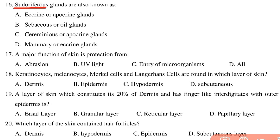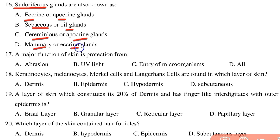Sudoriferous glands, also known as sweat glands, are also known as what? The options include eccrine and apocrine glands, sebaceous and oil glands, ceruminous and apocrine glands, and mammary and eccrine glands. The correct answer is eccrine and apocrine glands — these are the two types of sudoriferous glands.